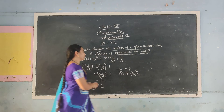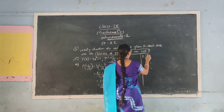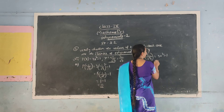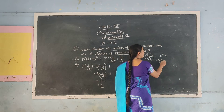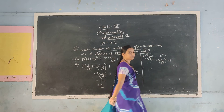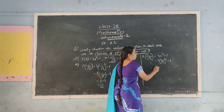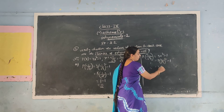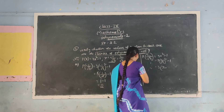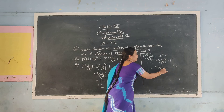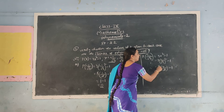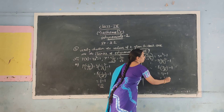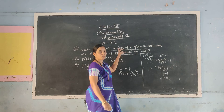Next, substitute x = 2 by root 3. Given: root 3 into (2 by root 3) whole squared minus 1. First solve the power: 2 squared = 4, root 3 squared = 3. So: root 3 into (4/3) minus 1. The 3s cancel, leaving 4 minus 1 = 3. The answer is 3, which is not equal to 0. So 2 by root 3 is not the zero of the polynomial.